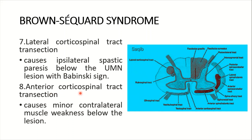Number eight: anterior corticospinal tract transection. This is the anterior corticospinal tract shown with the laser. Damage causes minor contralateral muscle weakness below the lesion. This is because 90% of the fibers of the corticospinal (pyramidal) tract are in the lateral corticospinal tract, and only 10% are in the anterior corticospinal tract, so this causes only minor weakness.